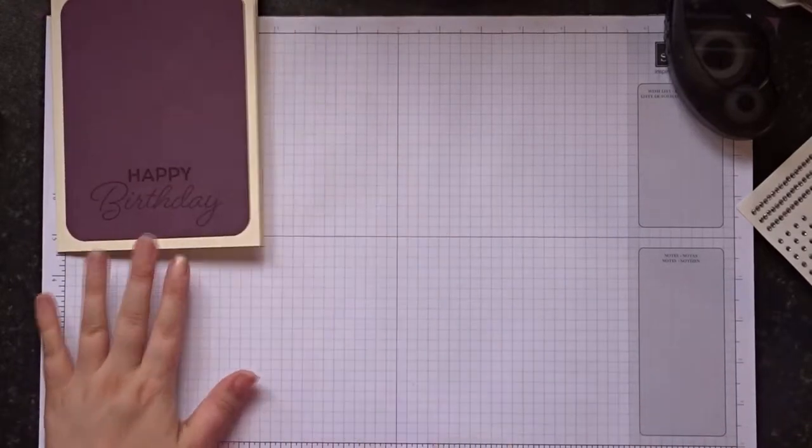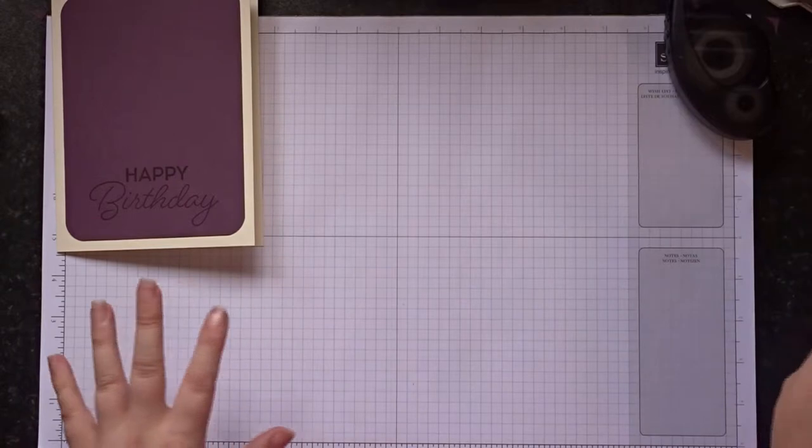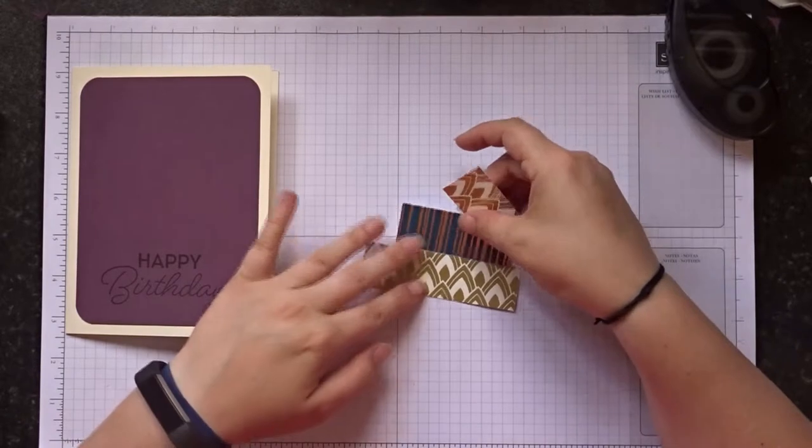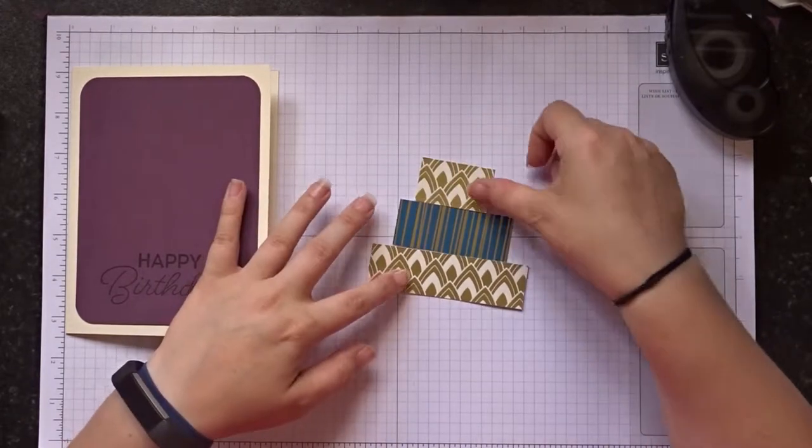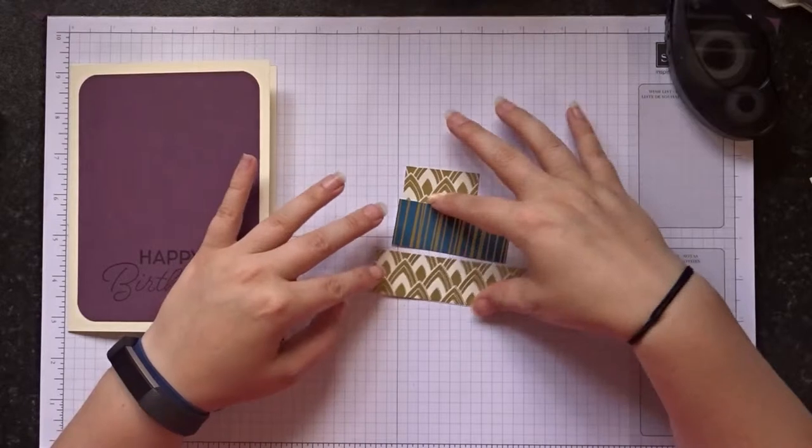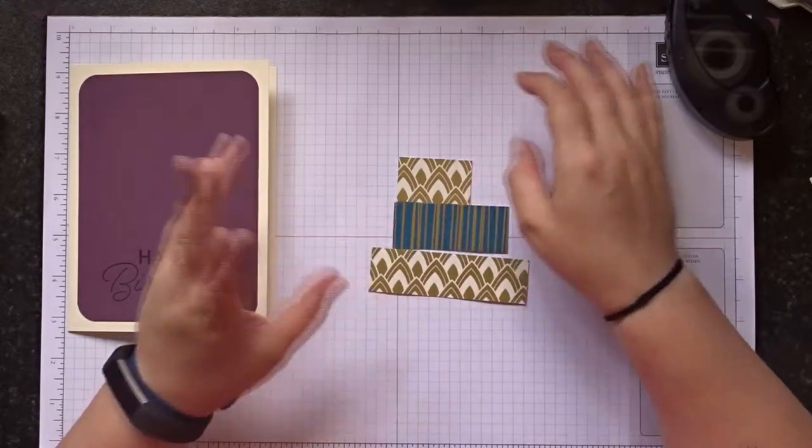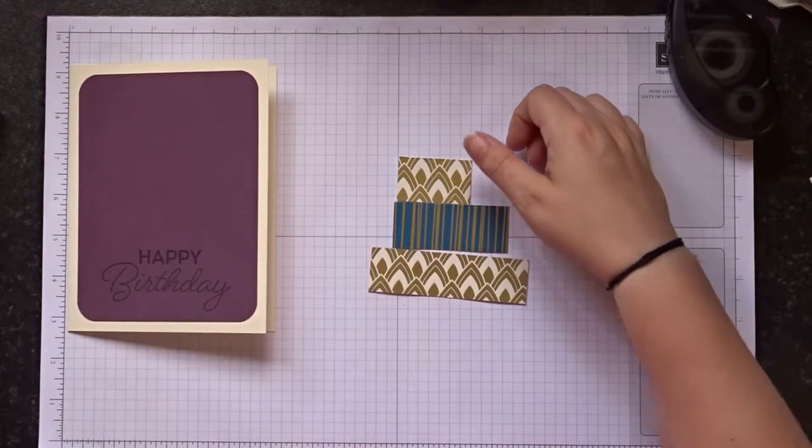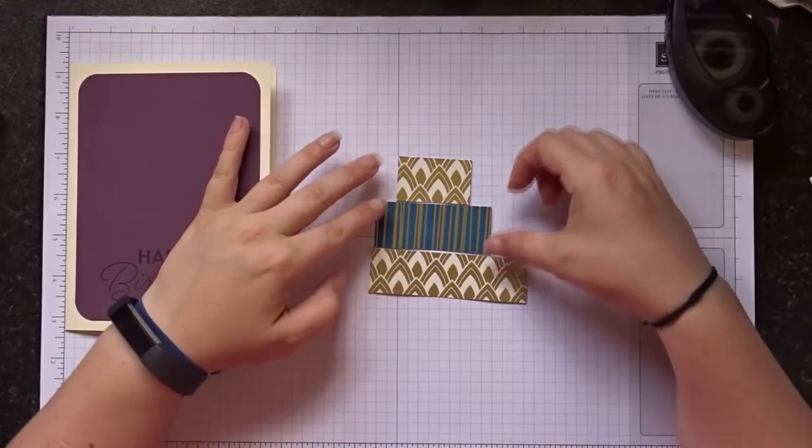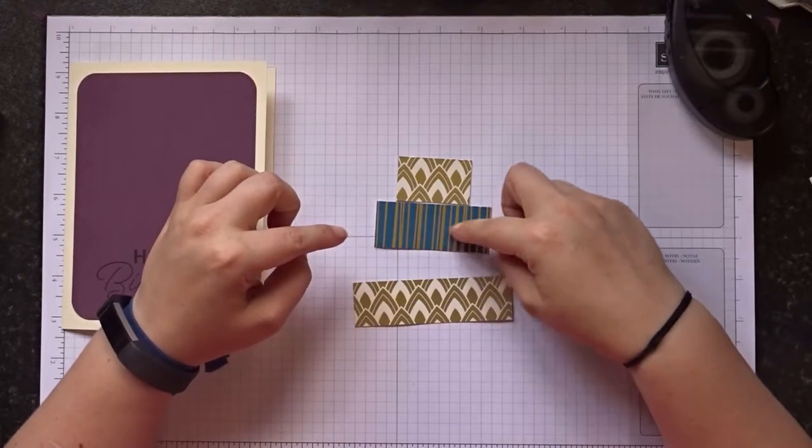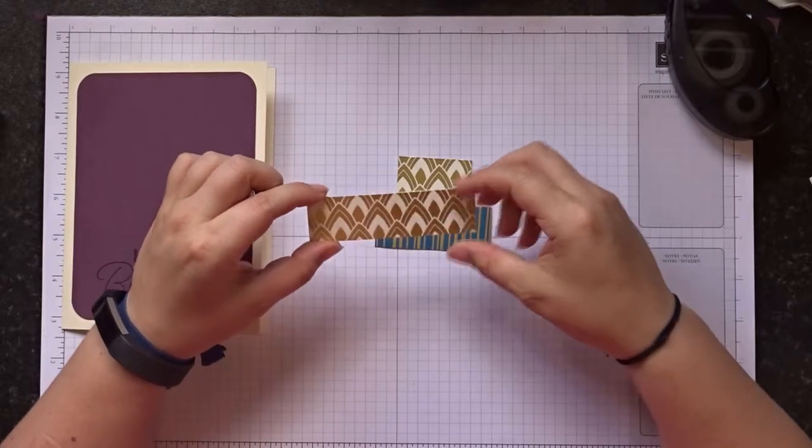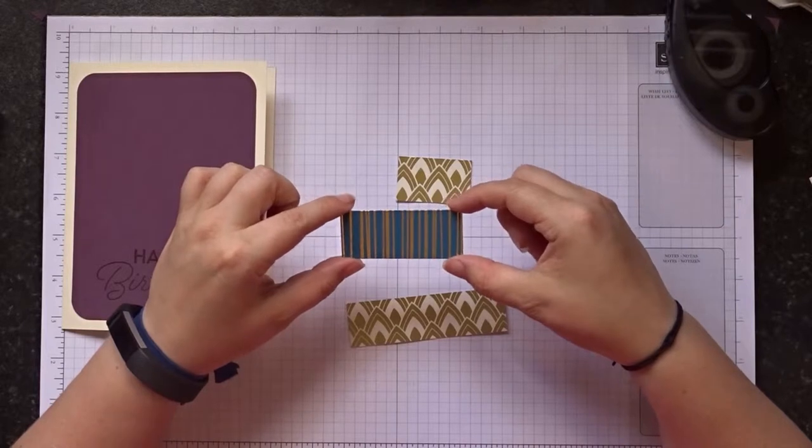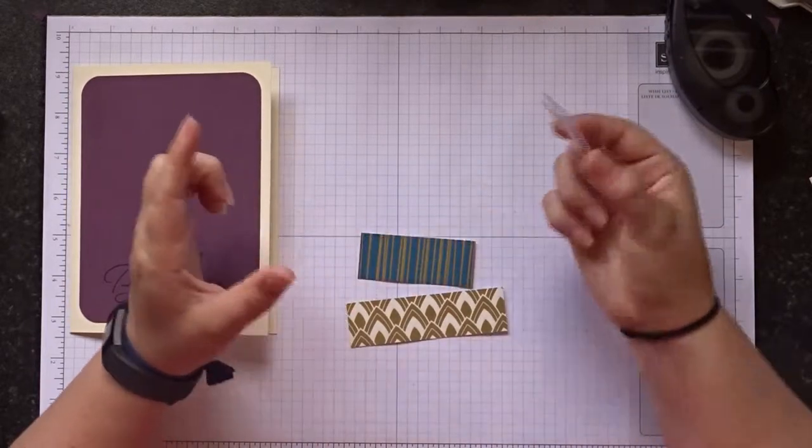So the next thing I'm going to do is make the cake element on this. I have already pre-cut my DSP for this just to save a bit of time. So I'm going to make a little cake and stack it together sort of like that. So I've got three pieces, two of one and one of another, and this is from the Eastern Palace Collection, the Eastern Design paper. So each one is one and an eighth high. The largest one is one and an eighth by three and three quarters. Then we have one and an eighth by two and three quarters, and one and one eighth by one and three quarters.